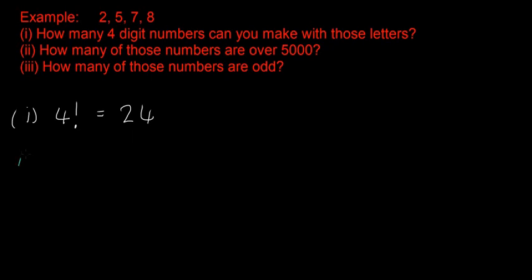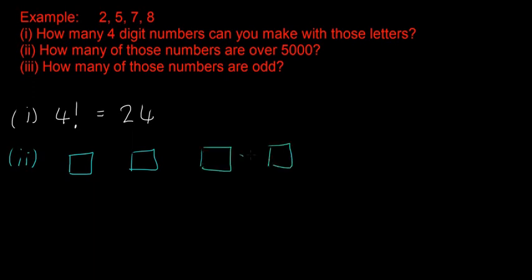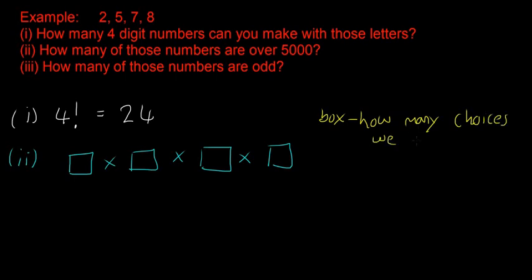That first one is straightforward; the next two won't be. For part 2 — how many of those numbers are over 5000 — we use the box method. So you draw 4 boxes, and each of them are going to be multiplied by each other. Each box represents not one of the digits, but how many choices we have.